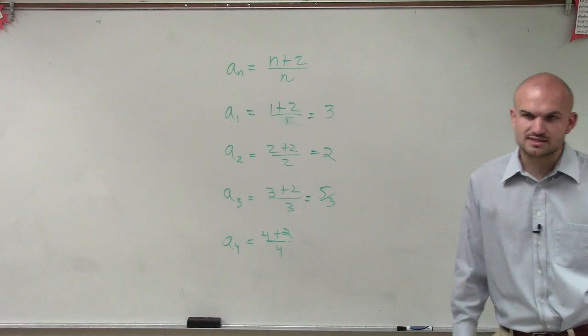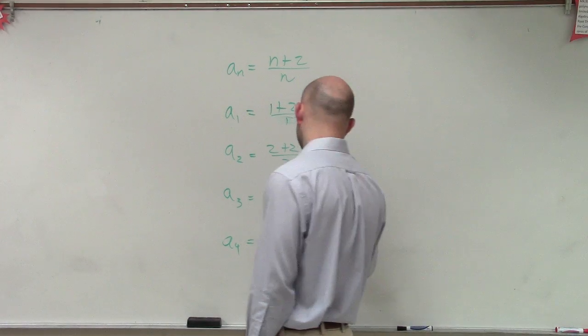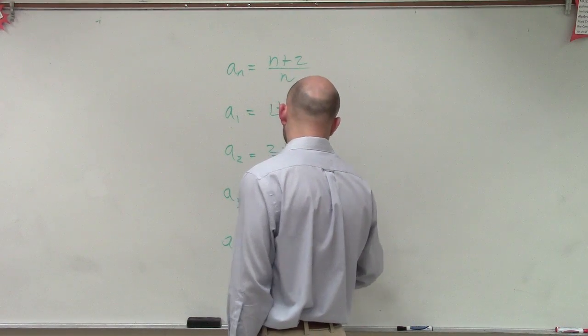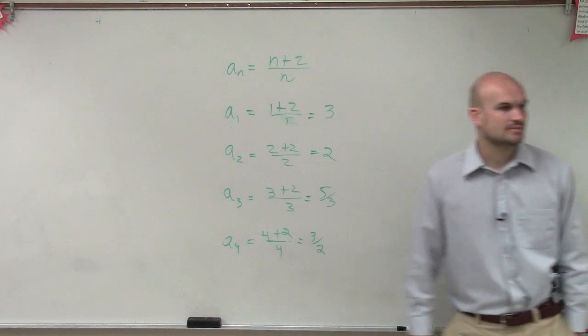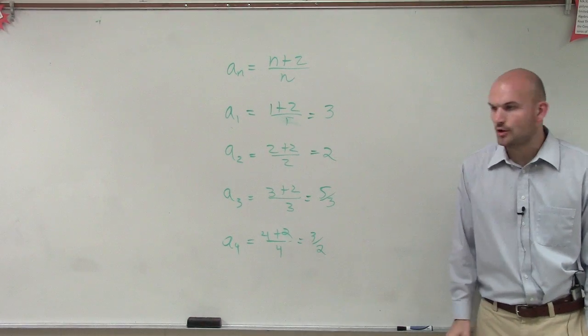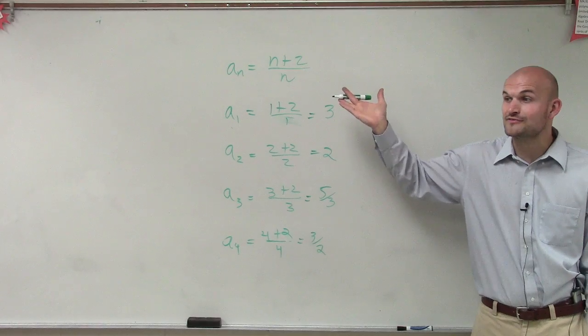And 4 plus 2 is 6, 6 divided by 4 is 3 halves, or 6 over 4 reduced down to 3 halves. So that's how you find the first four terms.